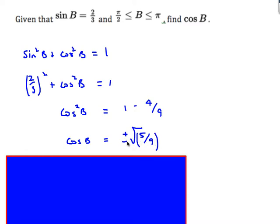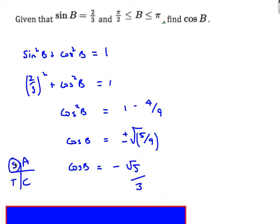Don't forget the plus or minus. The last step is to decide: positive or negative? We're in the second quadrant, where only sine is positive. Therefore cos is negative, giving cos b = −√5/3.